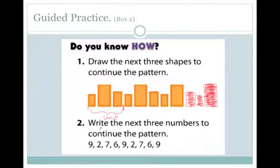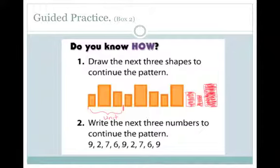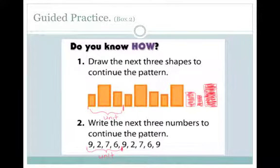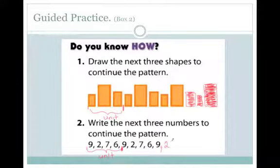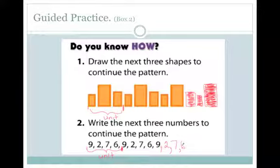Let's do number two: write the next three numbers to continue the pattern — nine, two, seven, six, nine, two. I see that nine is the beginning, so here is where my unit ends and here is where my unit begins. So the unit is nine, two, seven, six. What number follows the nine? The two. And what number, based on my unit, follows the two? Seven. And following the seven is the six. And that's how you use a unit to help you find the numbers or shapes or figures to complete a pattern.